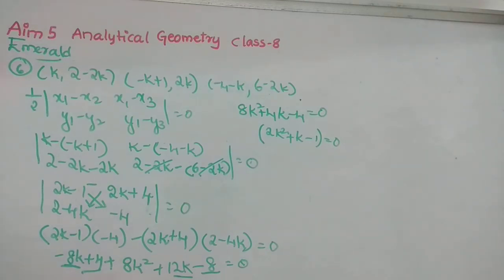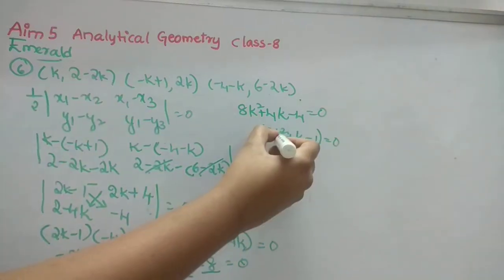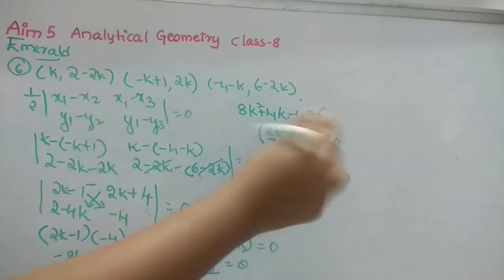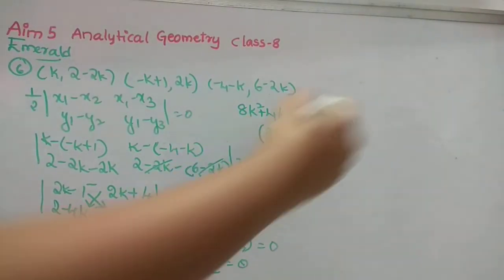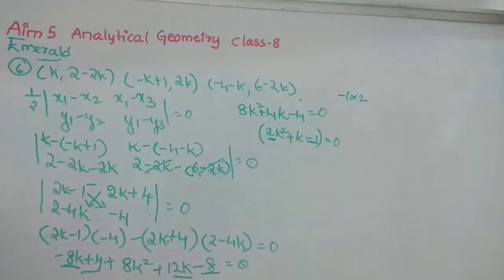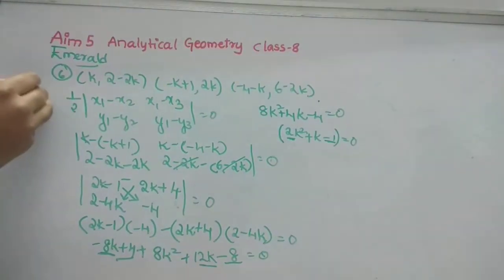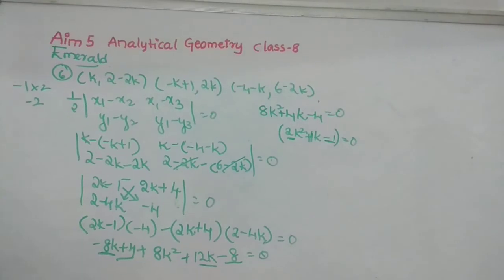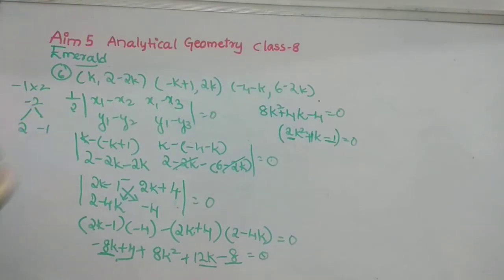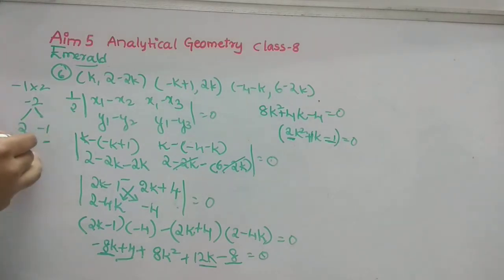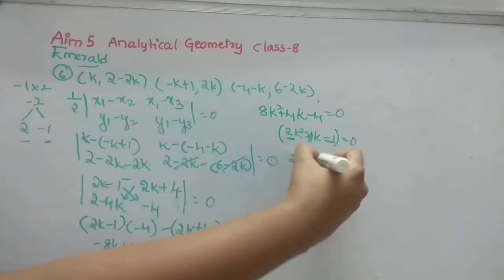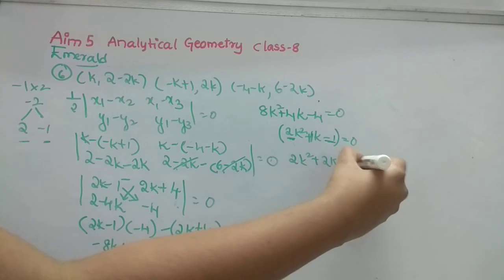Factorizing 2k² + k − 1 = 0. Multiply coefficient of k² (which is 2) by the constant (−1) = −2. We need two numbers that multiply to −2 and add to +1: that's +2 and −1. Splitting the middle term: 2k² + 2k − k − 1 = 0.